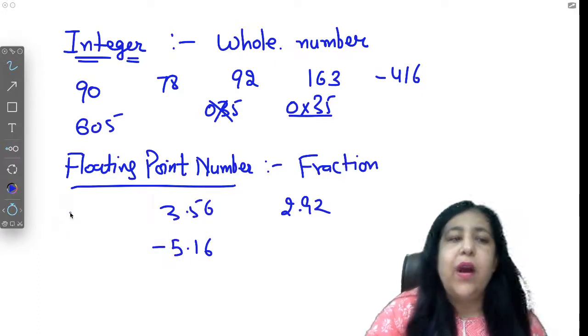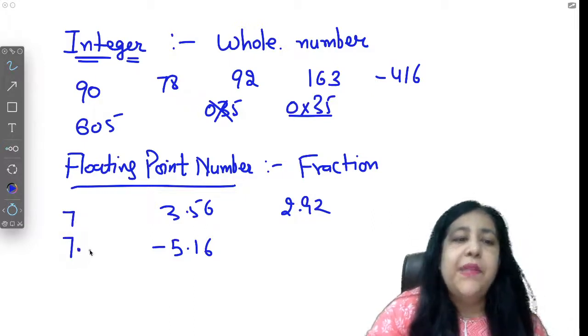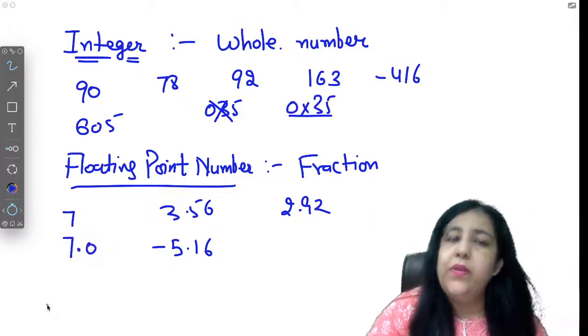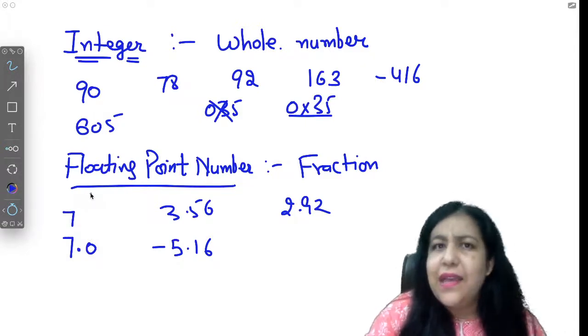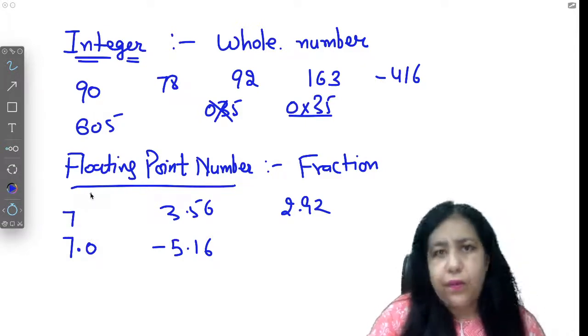So if you write 7, it's an integer, but if you write 7 point or 7.0, then it's a float. So that is the basic difference. It's not a very difficult thing, it's a very basic thing - integer and float.